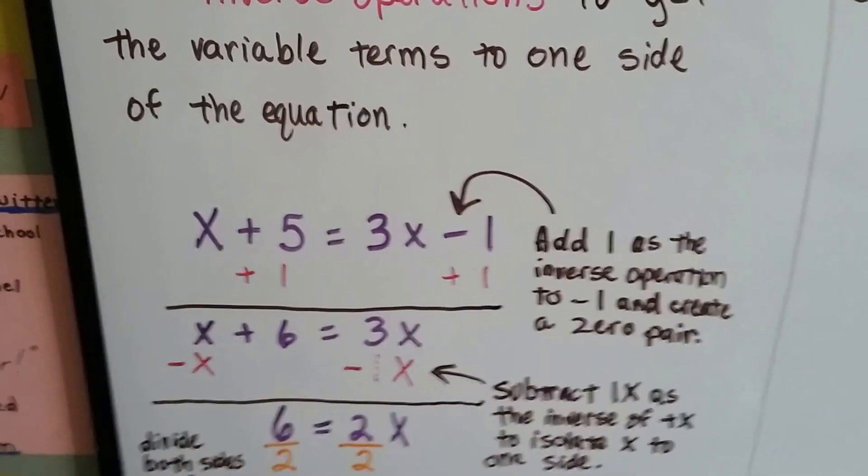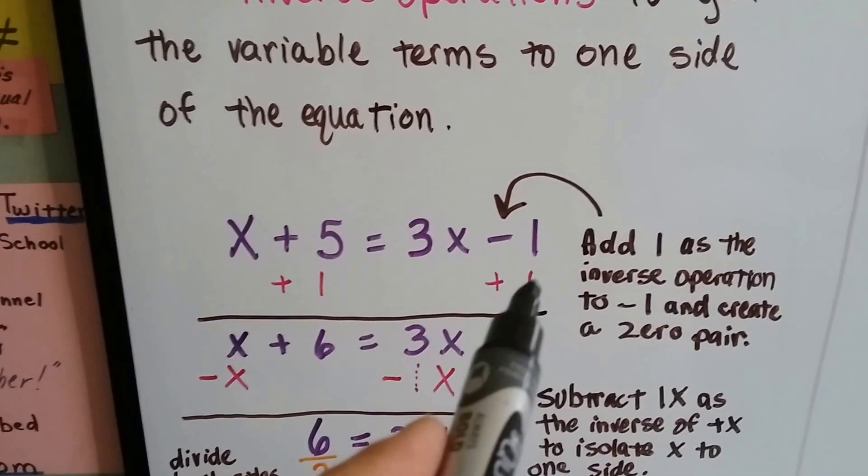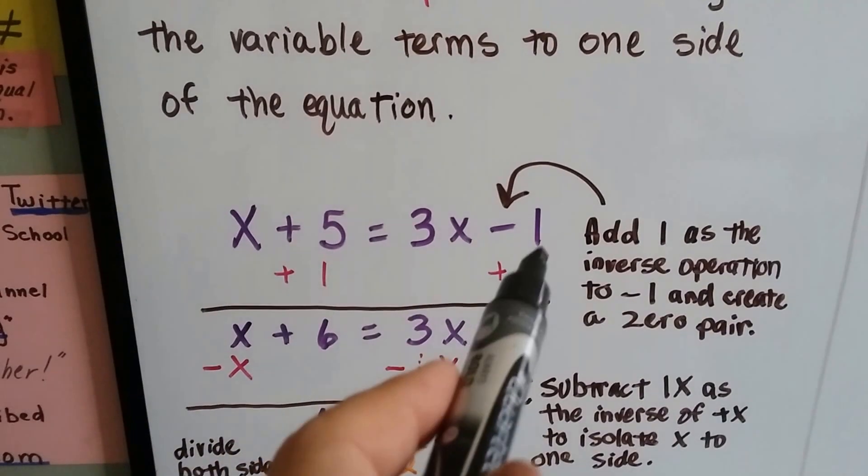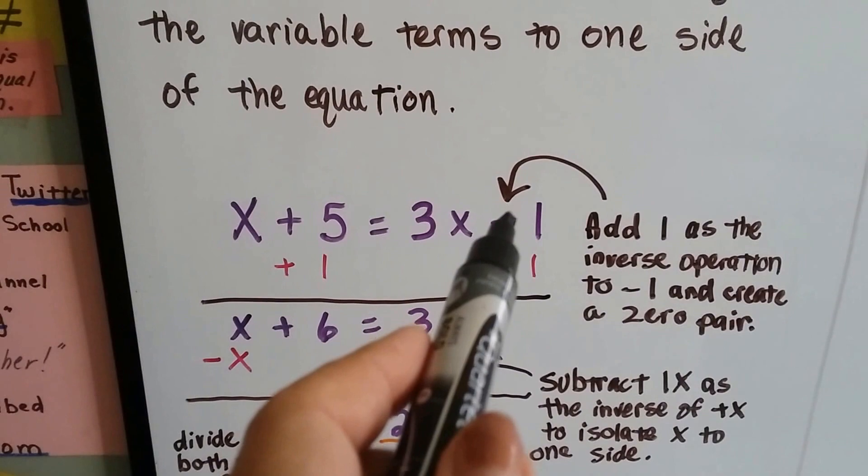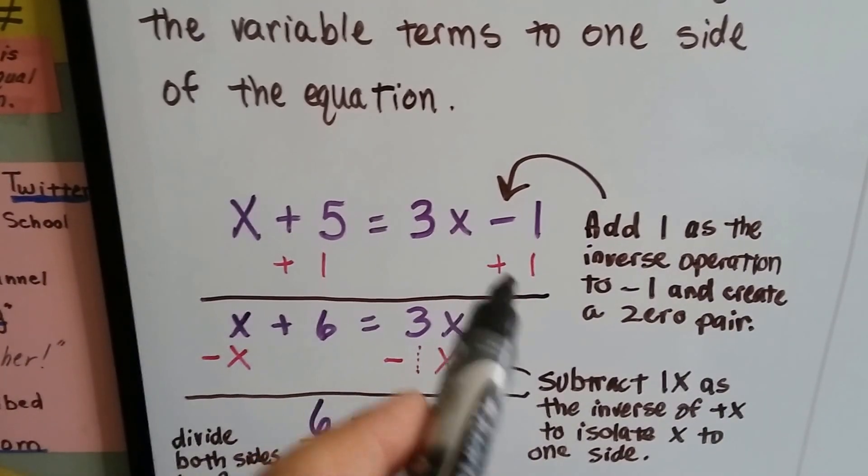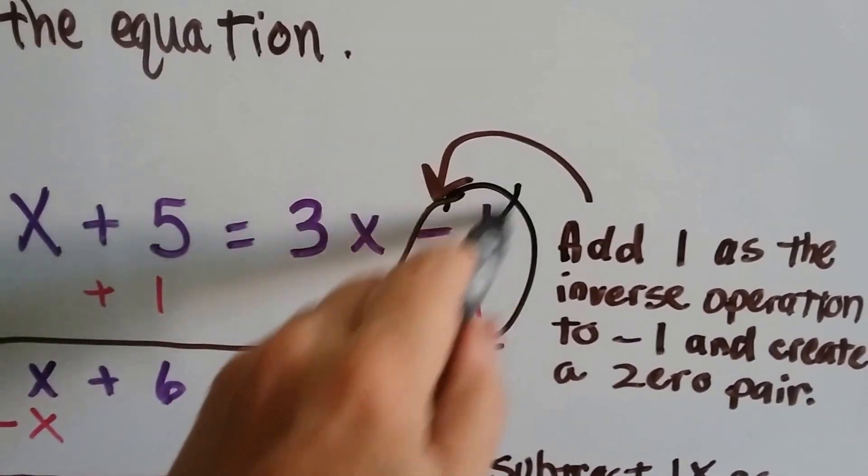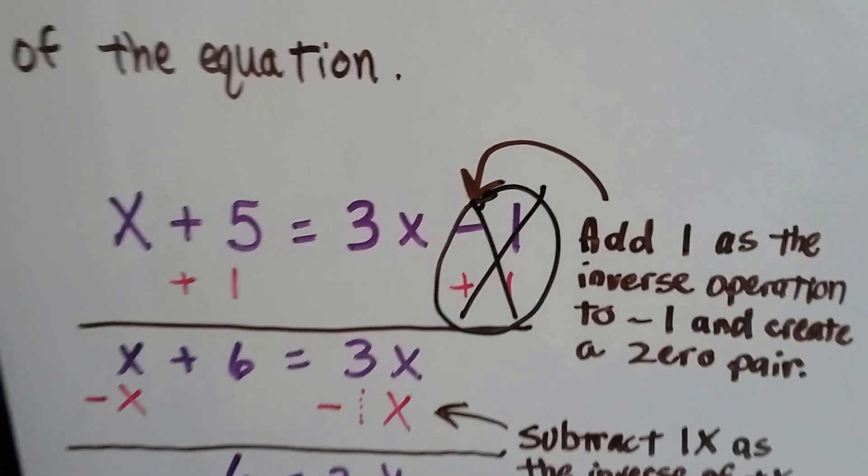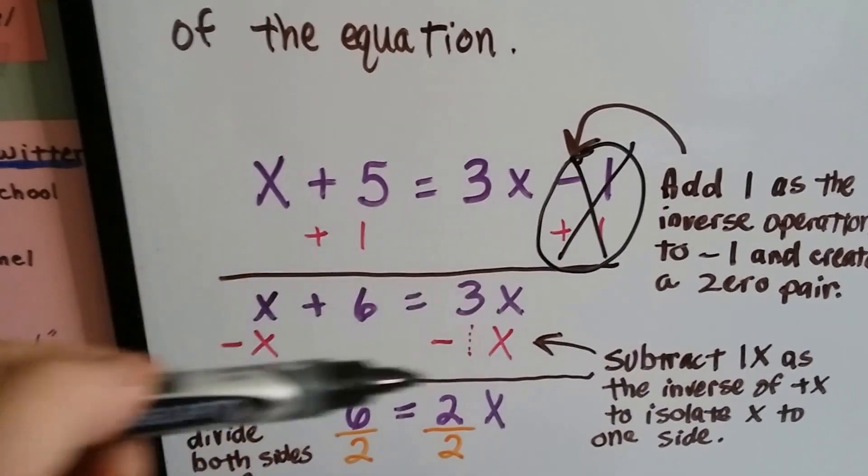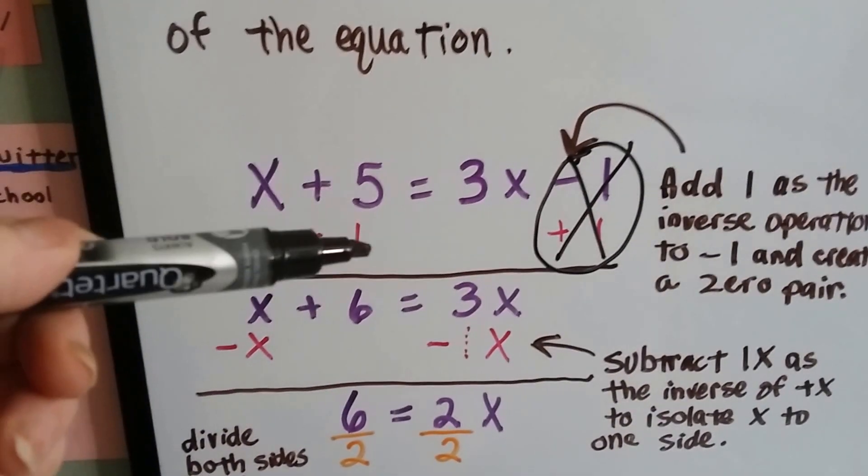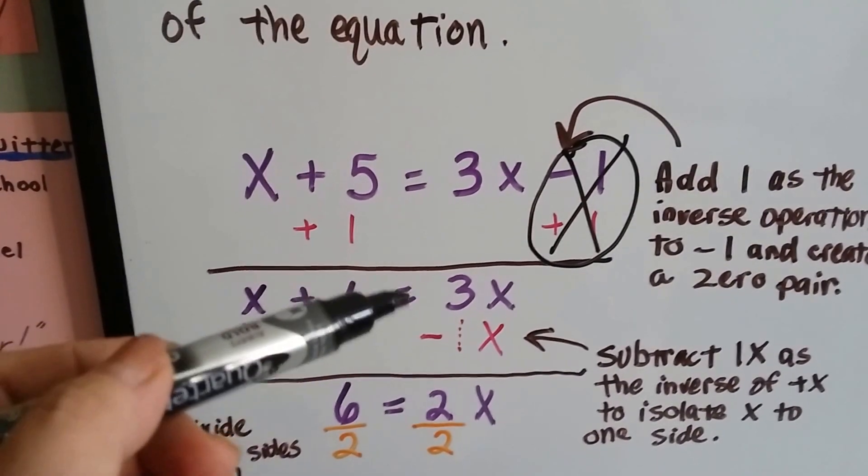Well, I don't know if you remember from seventh grade, but when we have a minus 1 on this side, we can add 1 to both sides of the equation as an inverse operation to subtraction. We use addition, and that will create a zero pair here. Do you remember this from last year? Minus 1 plus 1 is a zero. Now the 3x just drops down, and 5 plus 1 is 6, and that x drops down. Now we have x plus 6 equals 3x.